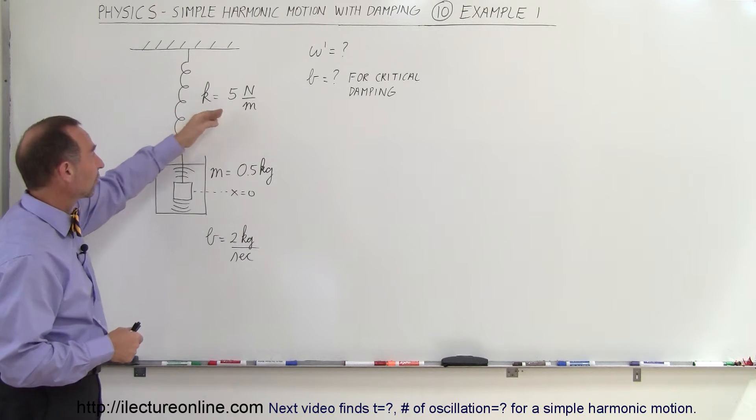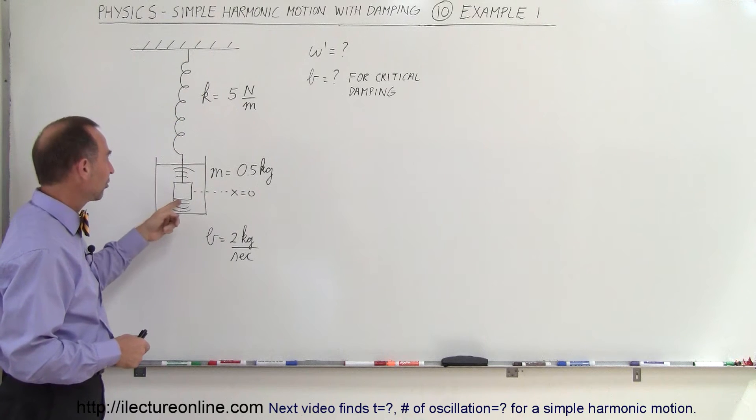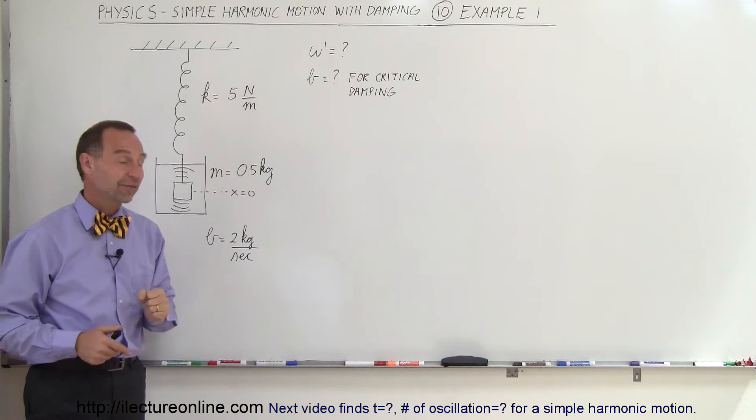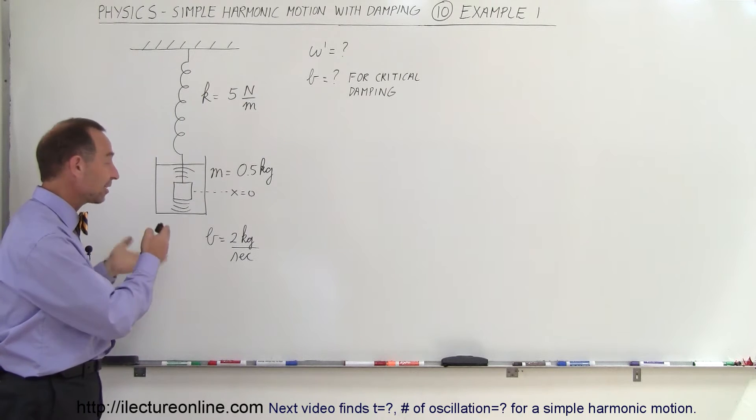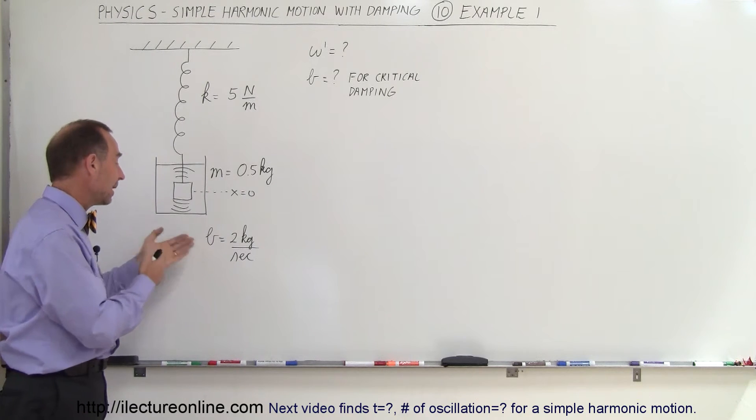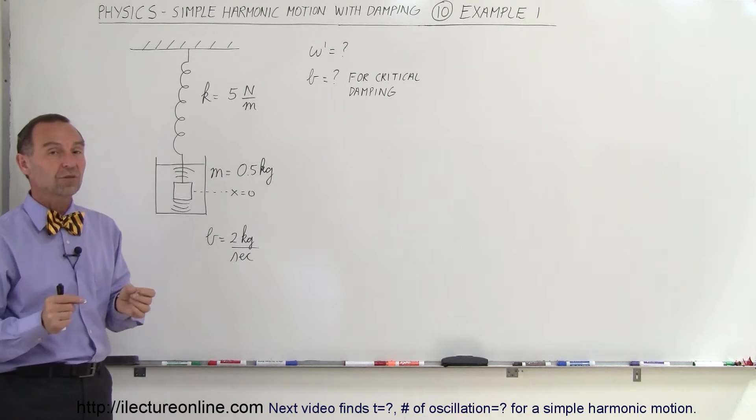So let's say we have a spring with spring constant five newtons per meter, a mass suspended from it equal to 0.5 kilograms and it's being affected by some damping effect. The damping constant is two kilograms per second.